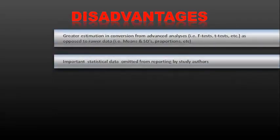Some disadvantages of effect sizes in general. The first one is that there's a greater estimation and conversion from advanced analyses such as F-Test, T-Test as opposed to raw data such as means, standard deviations, proportions. Just because the F-Test and T-Test are taking raw data and they're analyzing them in one step already. So when you put them into an effect size, it's kind of like a second level of estimation. So ideally, when you're getting effect size, you're going to want to get the raw data first if it's available. If not, then you're going to go for the more advanced test and you're going to use that to convert.